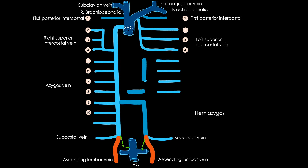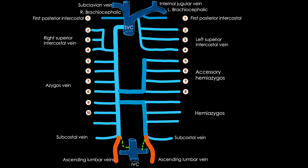On the right side, posterior intercostal veins from spaces 5 to 11 open into my azygous. On the left side, veins of the fifth, sixth, seventh and eighth spaces join to make the accessory hemi azygous, and this connects and pours blood into my azygous vein. Then the lower spaces on the left — spaces 9, 10 and 11 — their posterior intercostal veins open into the hemi azygous vein.